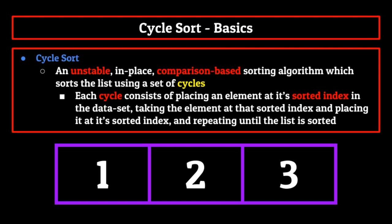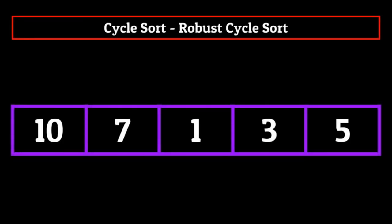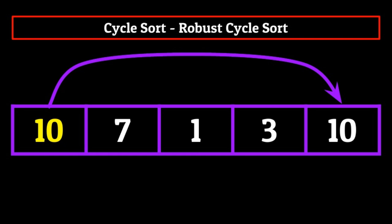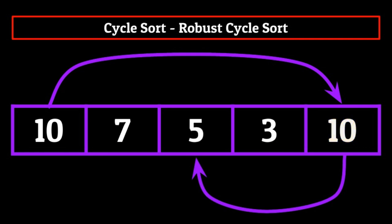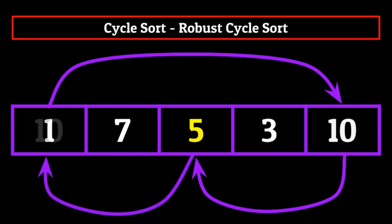To give you a little taste of cycle sort and introduce some important components, let's do a quick example. Say we have an array consisting of five elements. We begin with the first element, and our goal is to place that integer at its sorted index in the data set. In this small example, we can easily see that 10 is the largest element in this array, so its sorted index is at index location four, or the last one. We then take the element at index location four — the integer five — and place it at its sorted index. Five's correct location is at index location two. We then take the element at index location two — the integer one — and write it to its correct place. Since one is the smallest element, we place it at the zeroth index. This completes our first cycle.